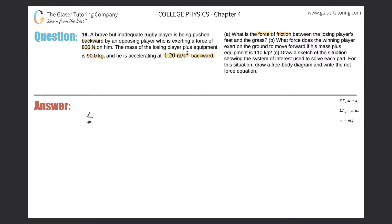Let's draw a straightforward diagram. This point will represent the losing player and this point will represent the winning player — they're in a match of rugby, mashed up together, both pushing on one another, and the winner is winning. The winner is exerting an 800 newton force on the loser. Drawing a coordinate plane, the 800 newton force is pointing backward, because the winner is pushing the loser in that direction, and they're accelerating backwards — so this force is 800 newtons.